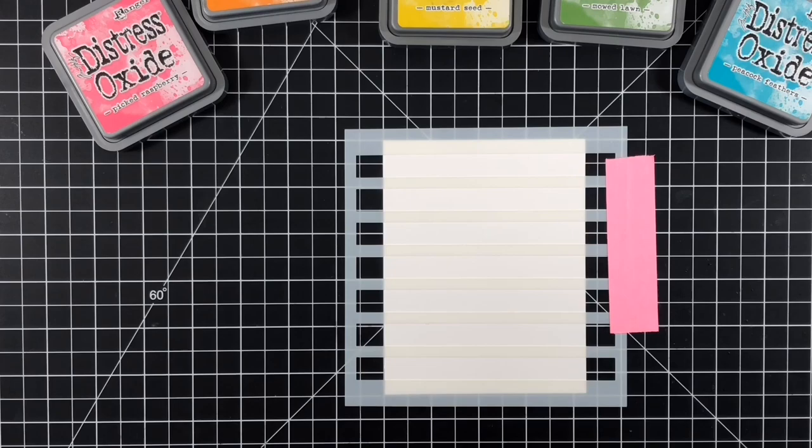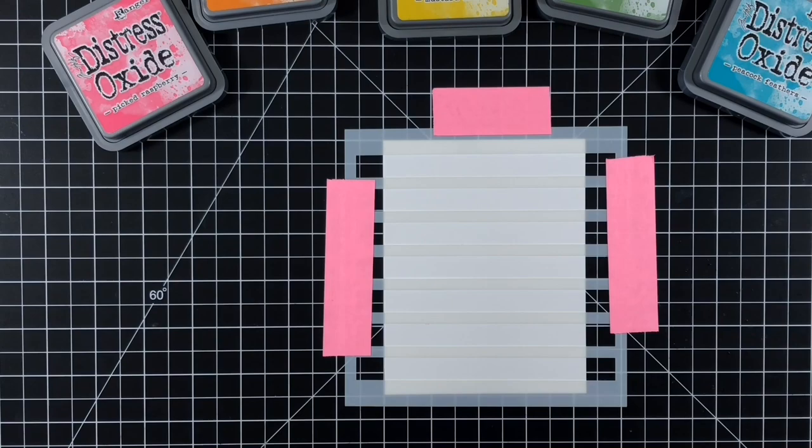I'll put the stencil over top and use post-it tape to tape the stencil down so that nothing shifts when I'm doing my ink blending.